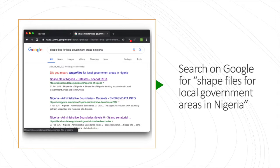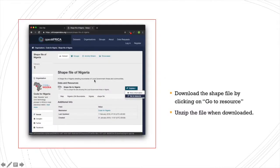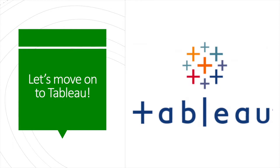All you need to do is go into Google and search for shape files for local government areas in Nigeria. Bear in mind, sometimes data like this is not always easy to find, but in this case luckily it was available. Just search for shape files for local government areas in Nigeria and click on the first result, which is from Open Africa. There you can download the resource — click on Explore and then click on Go to Resource, which downloads the file. It's a zip file, so unzip it, and then we'll move on to Tableau to get the rest done.